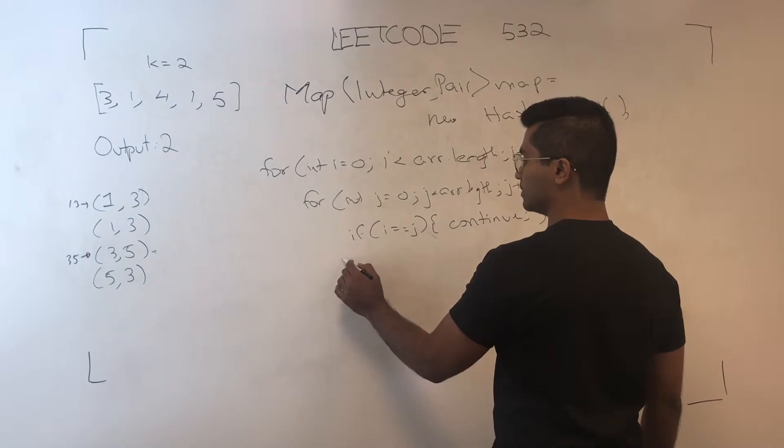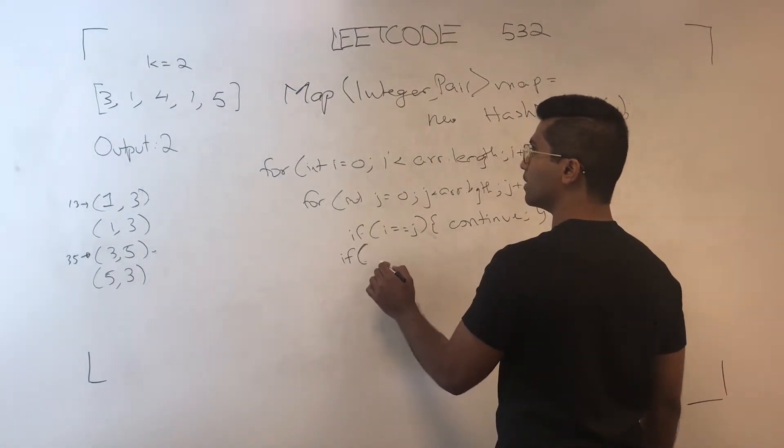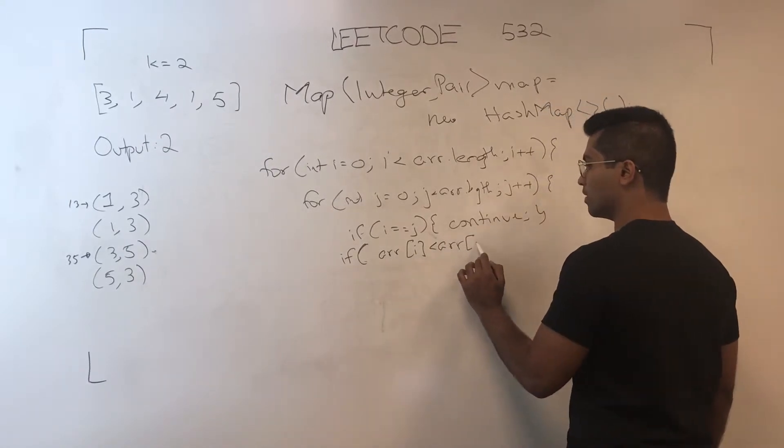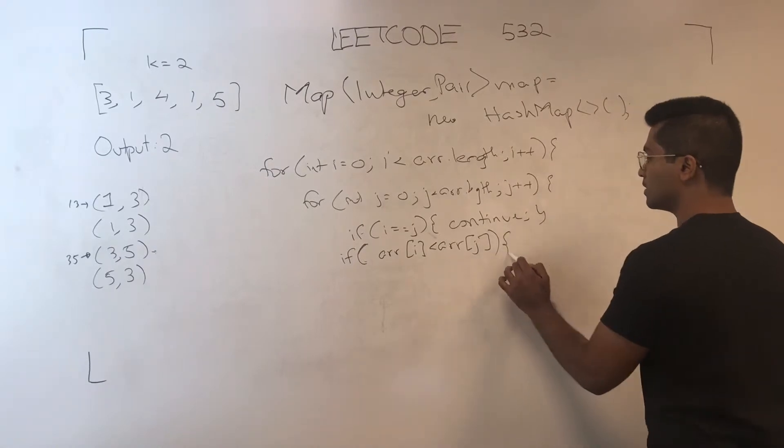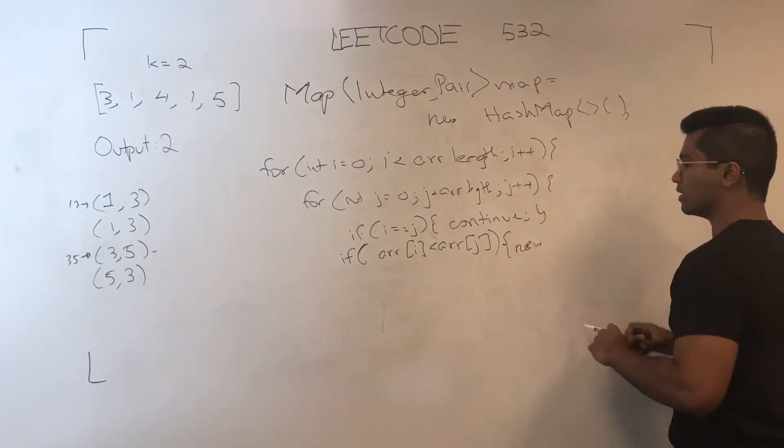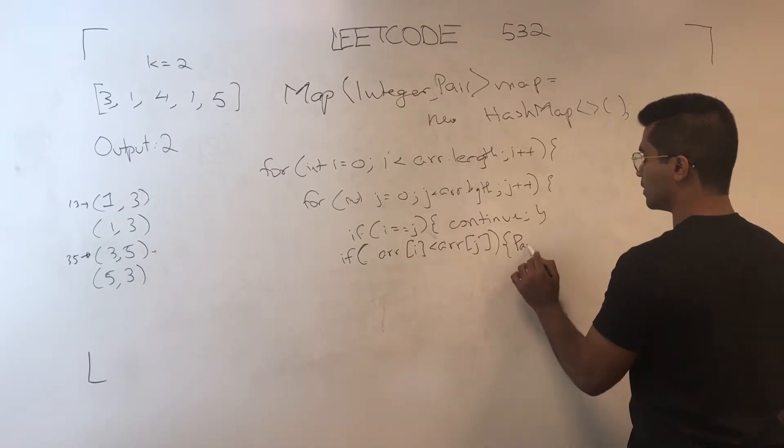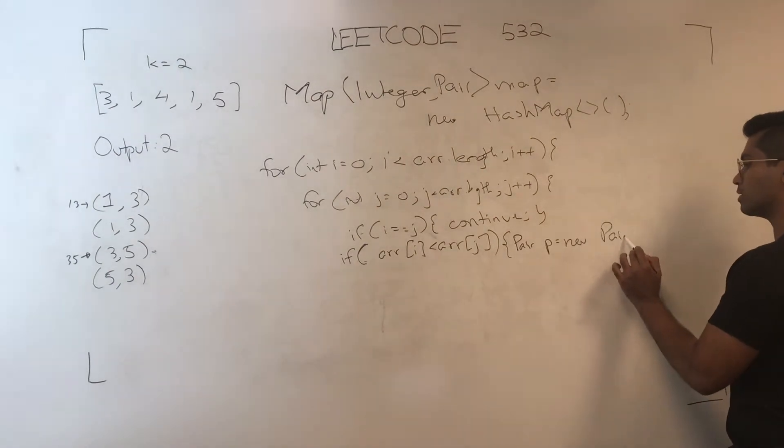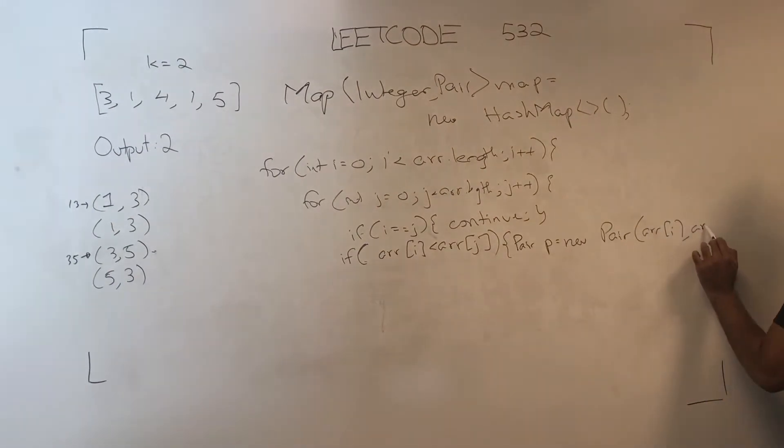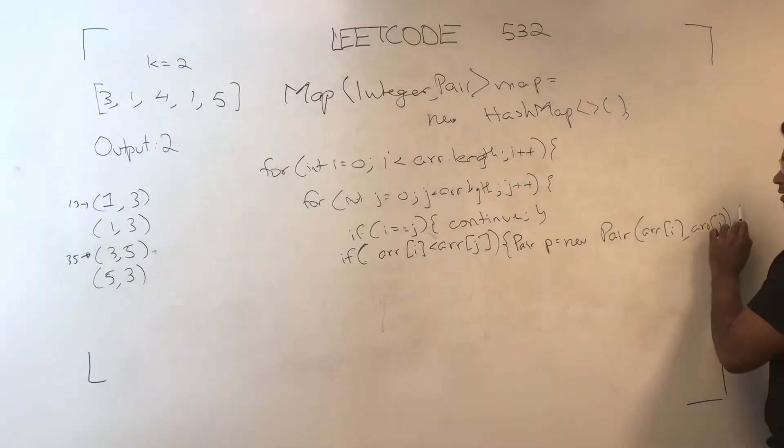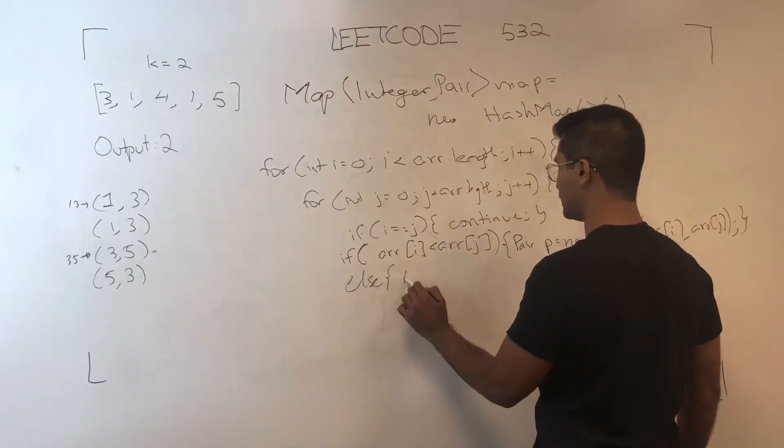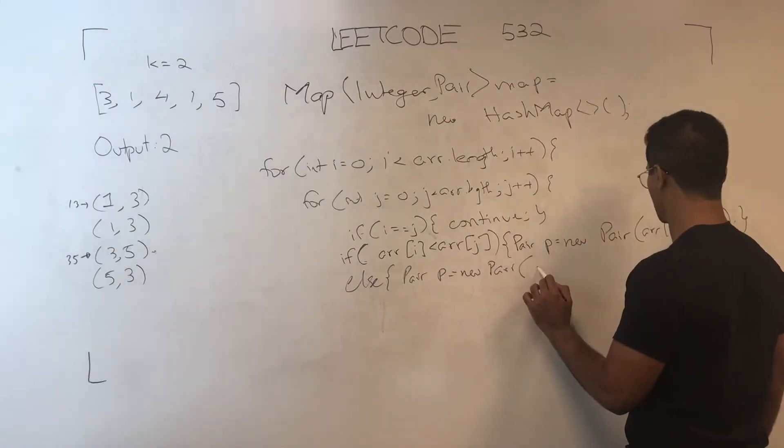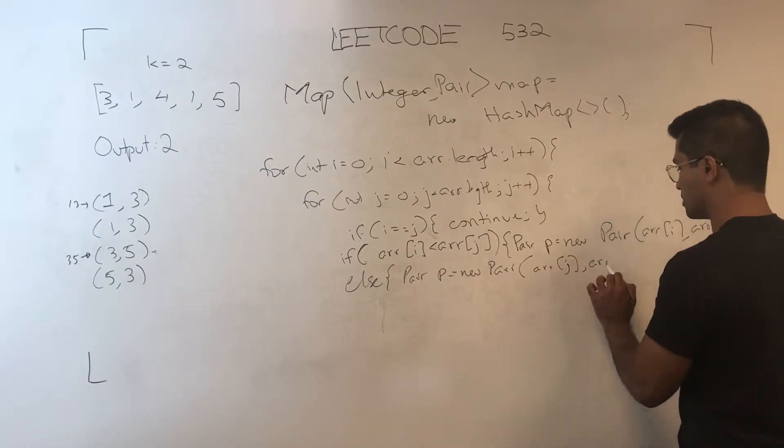If array of I is less than array of J, then pair P is going to be new pair array of I comma array of J. Else pair P is new pair array of J comma array of I.